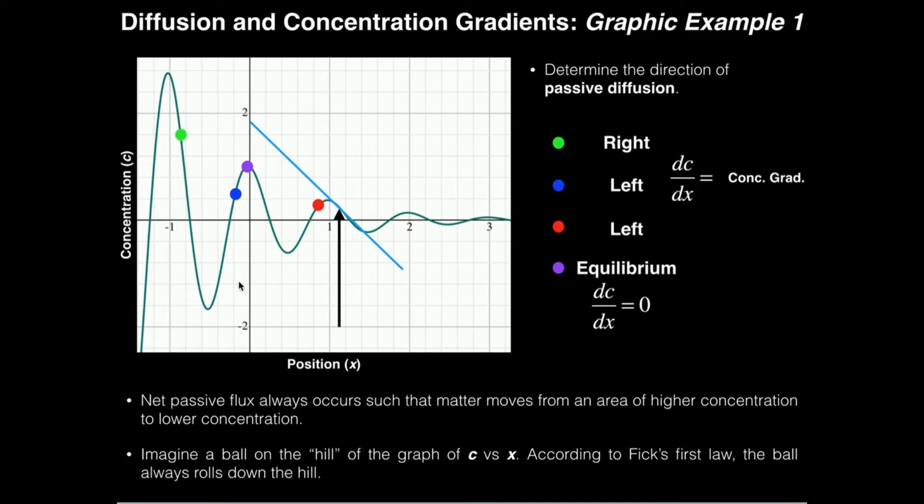Alright, so let's think about different points on the graph. Let's take for example this point right up here. That's the highest point on the graph that I had illustrated. So I would say that that is the highest concentration, right? It's the highest vertical component, so this is the highest concentration. Then let's go maybe right here to this minimum, this local minimum. This is a very low point on the graph, and so I would say that that is low concentration.